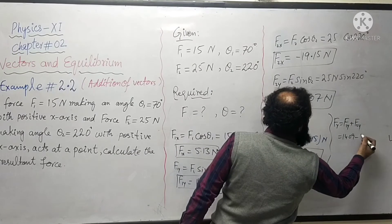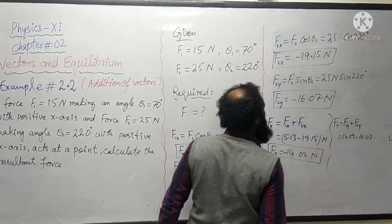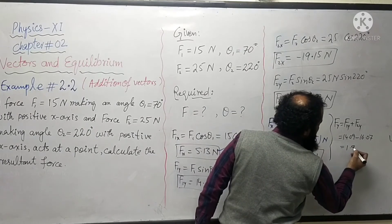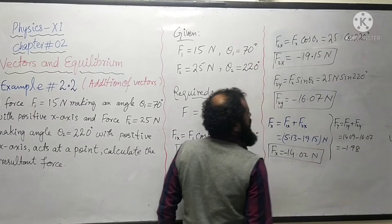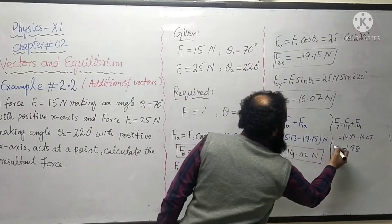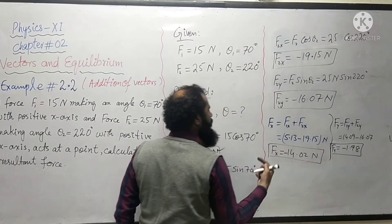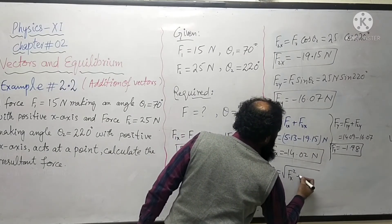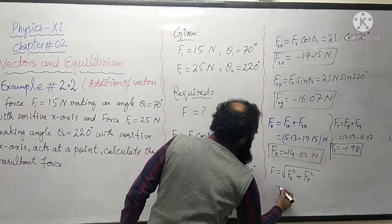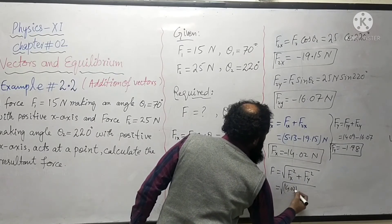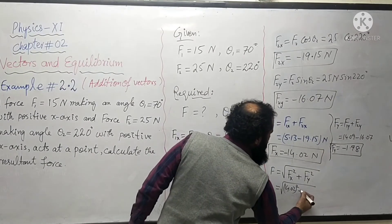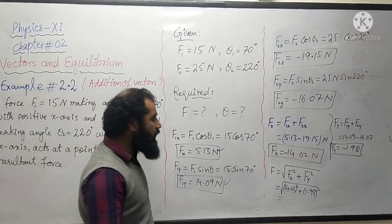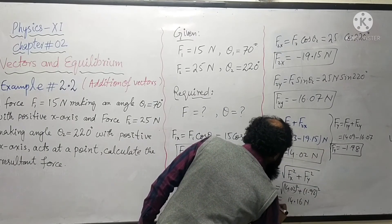For the y-component: F1y is 14.09 and F2y is minus 16.07. Since F2y is larger in magnitude, the result is negative: Fy equals minus 1.98 newtons. Now we calculate the resultant magnitude using Pythagoras: F equals square root of Fx squared plus Fy squared — that is square root of (14.02 squared plus 1.98 squared) — giving a resultant of 14.16 newtons.